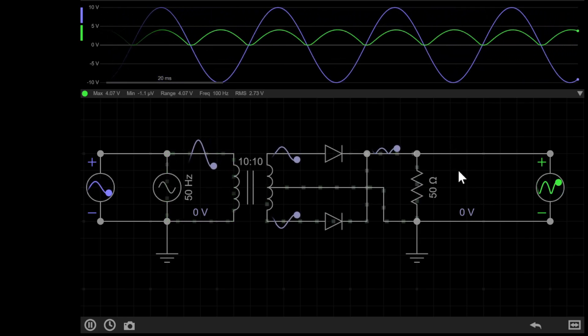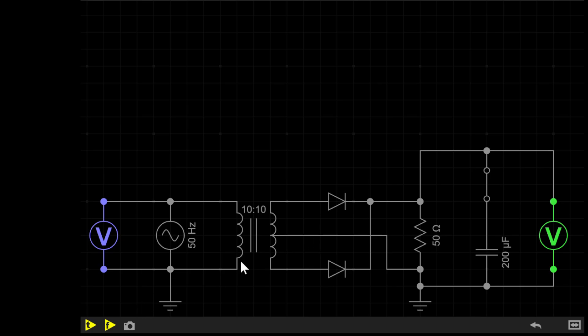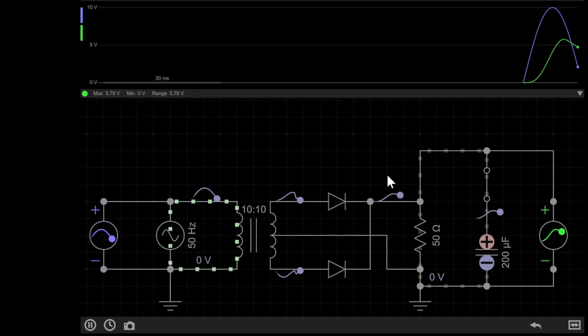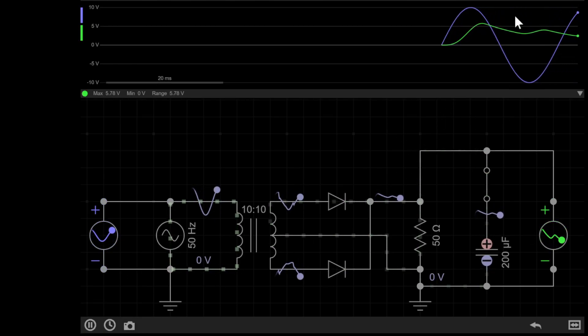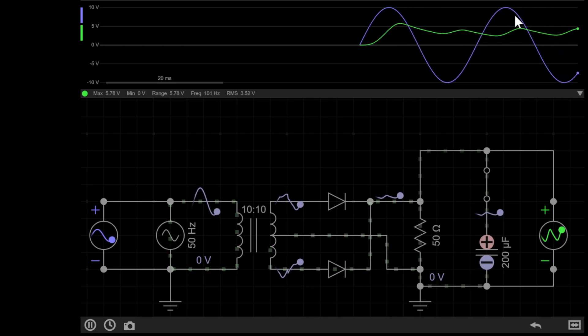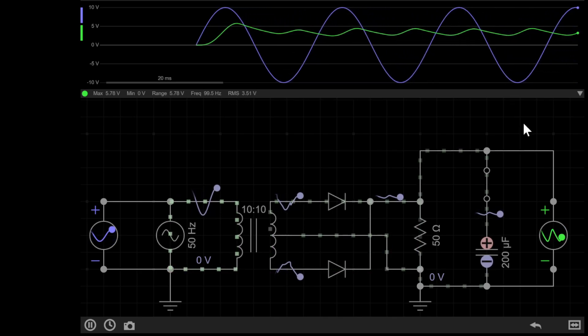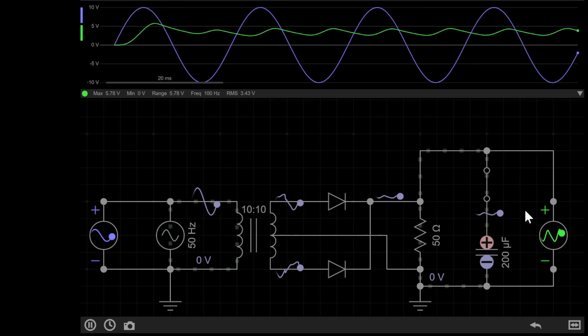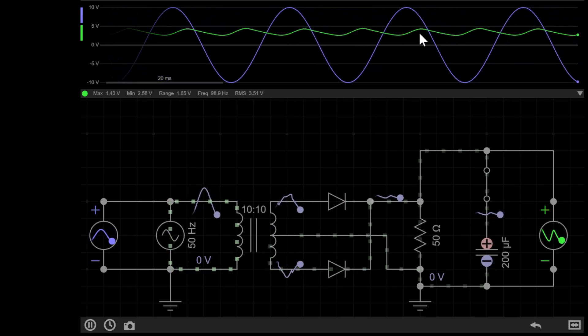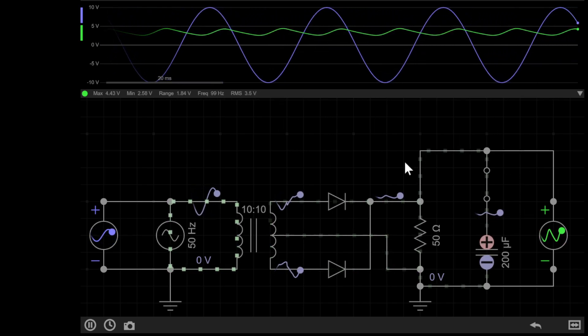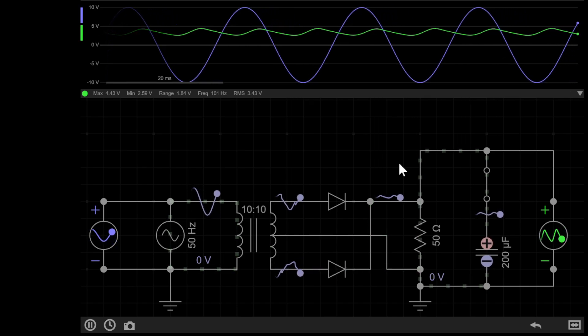So if we now pause the simulation and add a 200 microfarad capacitor and a switch and simulate the circuit, you'll notice that the output, the green line here, is no longer a bouncing sine wave and now a smooth rippling close to the DC wave. If you were to add more capacitors in parallel different values, we can make this even smoother, like a regular DC supply. You could then use this new DC power supply to power whatever your circuit needs.